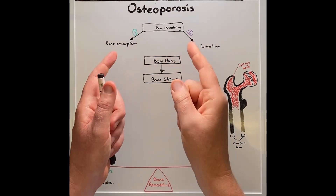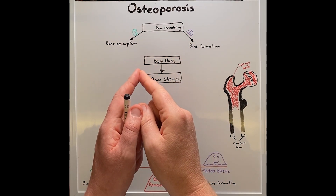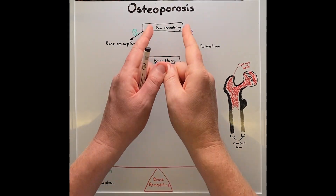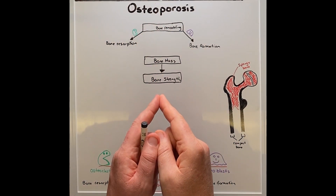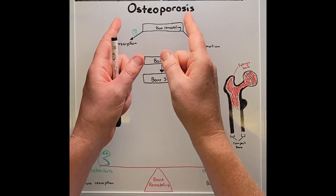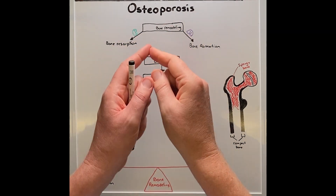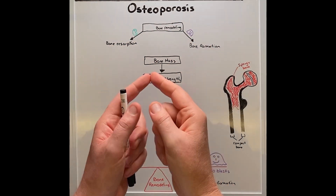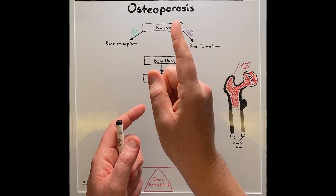The word osteoporosis is a compound word where osteo refers to bone and porosis refers to pores. Simply put, osteoporosis is a disease where we have weakening bones.